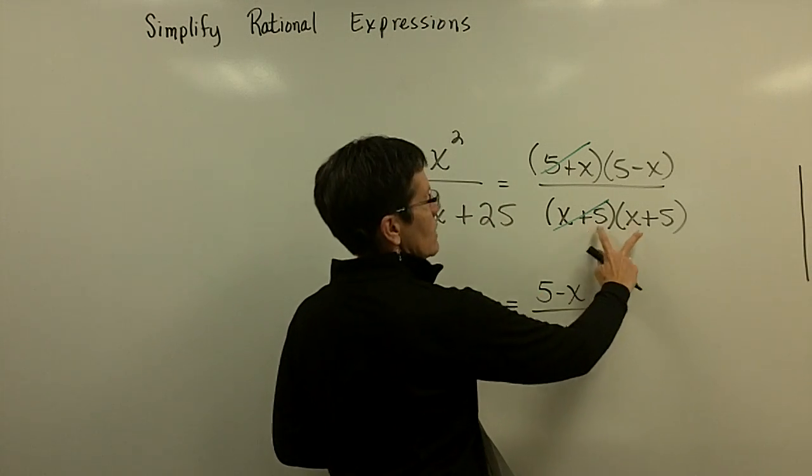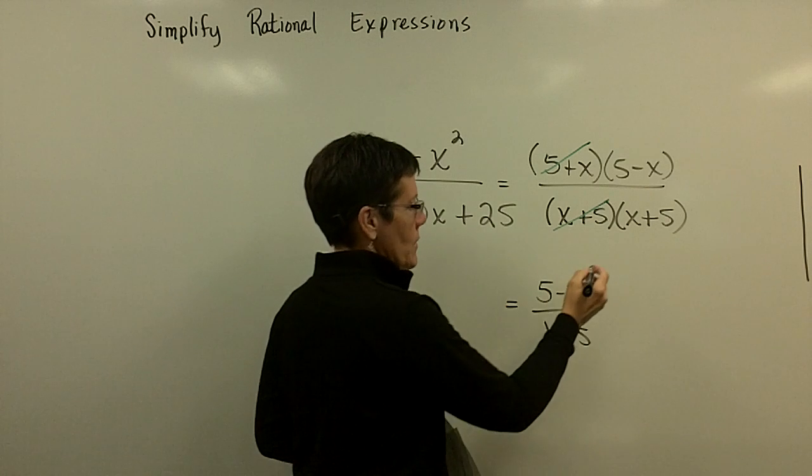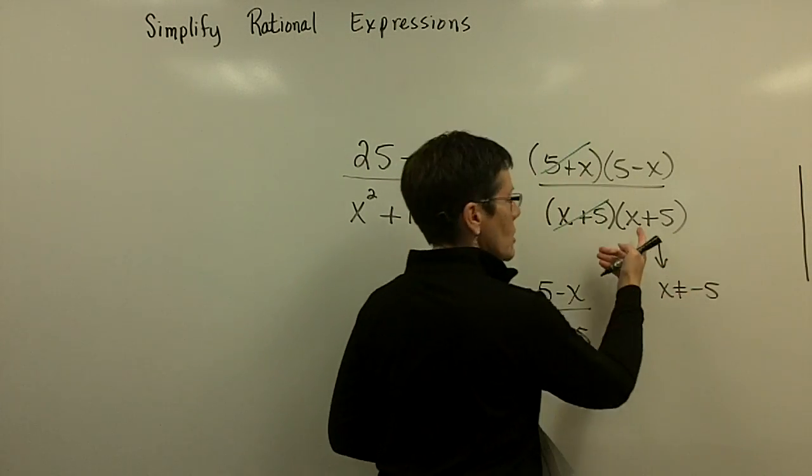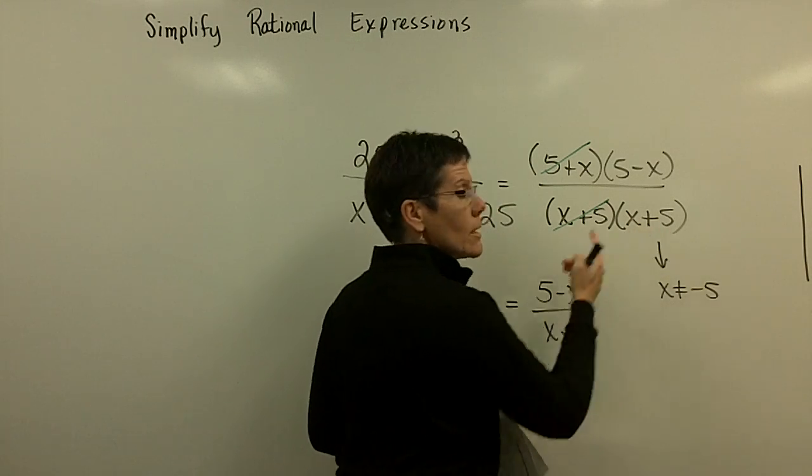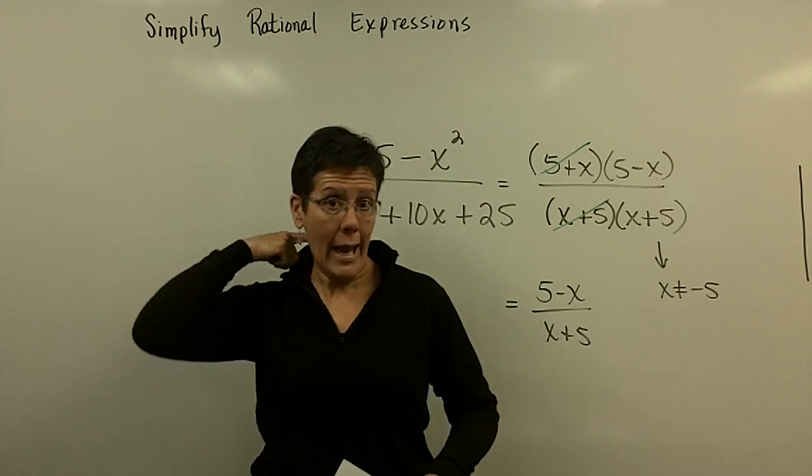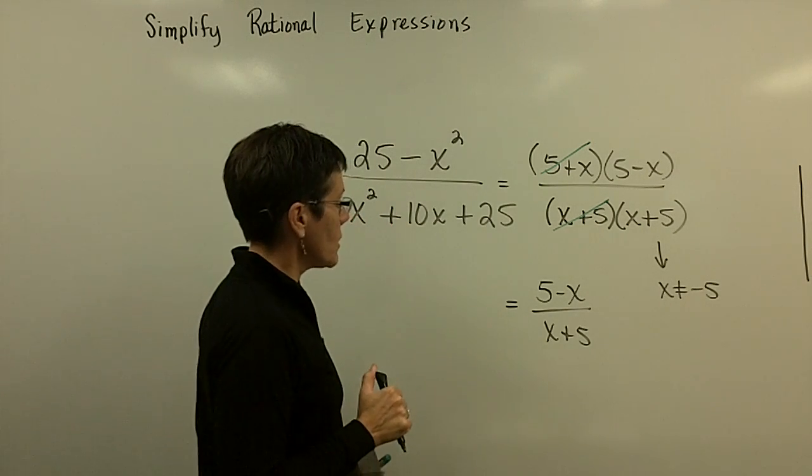Let's just do a real quick reminder of restrictions on the domain. The original denominator had these two values. Since they're identical, the only value for x that's troublesome for us is a negative 5. Because if you put in a negative 5 for x and added 5 to it, you'd have 0. And 0 times, you know, anything, it doesn't matter, is equal to 0. And so, that's my restriction on this particular function.